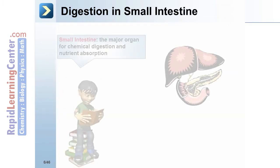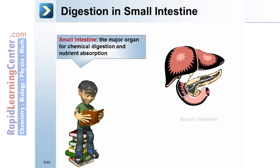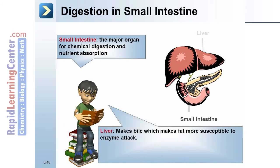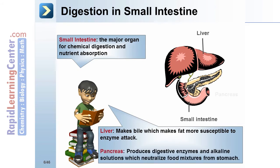Digestion in the small intestine: the small intestine is the major organ for chemical digestion and nutrient absorption. The liver makes bile, which makes fat more susceptible to enzyme attack. The pancreas produces digestive enzymes and alkaline solutions, which neutralize food mixtures from the stomach.